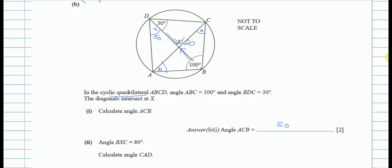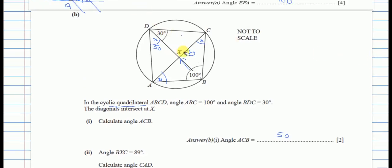Now angle BXC is 89 degrees. Calculate angle CAD. In the other triangle, angle BXC and angle AXD are vertically opposite, so angle AXD is also 89 degrees. We already know angle ACB (or ACD) is 50. The triangle AXD has angles 89 and 50, so the remaining angle CAD is 180 minus 89 minus 50, which equals 41 degrees.